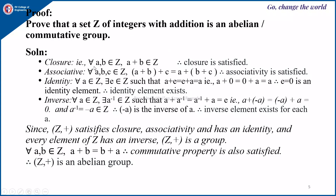First, closure: if you take any two integers then a plus b will also be an integer, therefore closure is satisfied. Associativity: if you take any three integers then (a plus b) plus c equals a plus (b plus c), therefore associativity is also satisfied. Identity: for a belonging to Z, there exists e belonging to Z such that a plus e equals e plus a equals a. Since a plus 0 equals 0 plus a equals a, therefore e equals 0 is the identity element, and therefore the identity element exists.